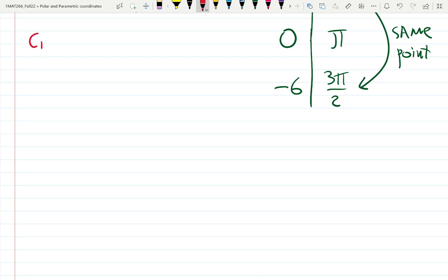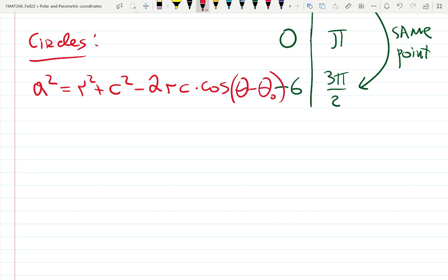Circles are not just x squared plus y squared equals r squared. It has a formula that looks like this. a squared equals r squared plus c squared minus 2rc times cosine. And cosine has a shift. Theta minus theta sub zero. That is a circle with the r, the center away from this length. How far I am from the pole, and theta is the angle.